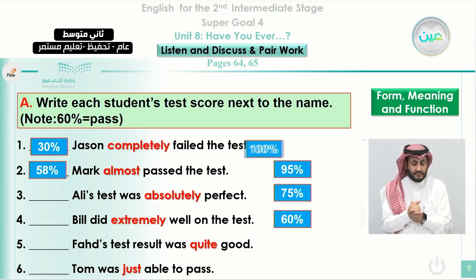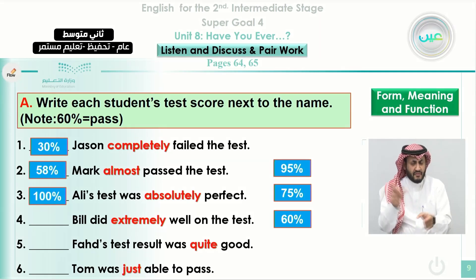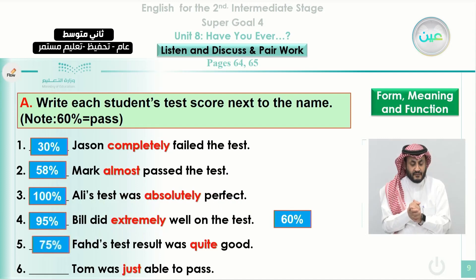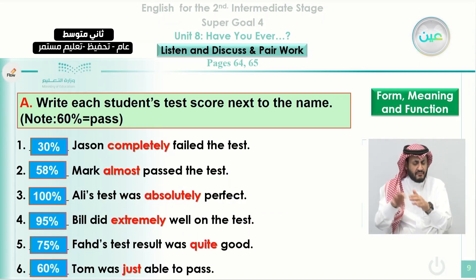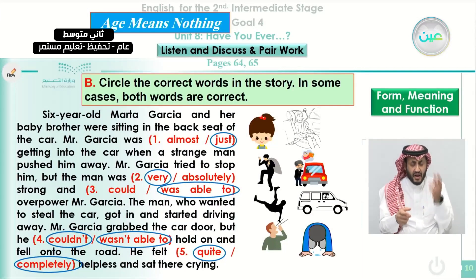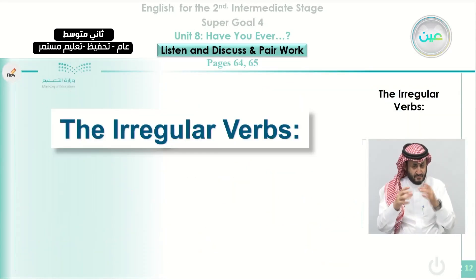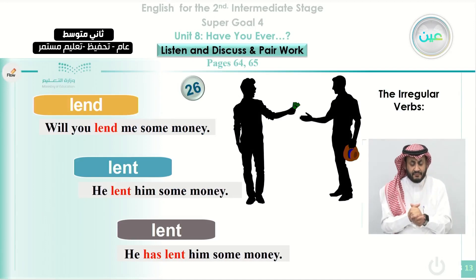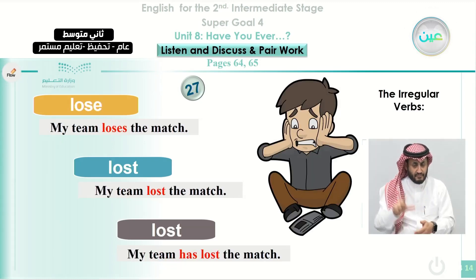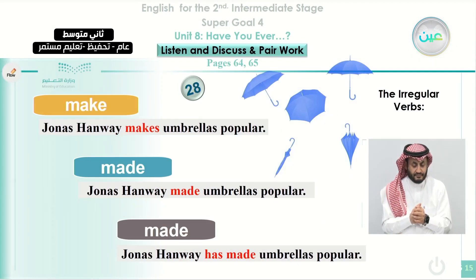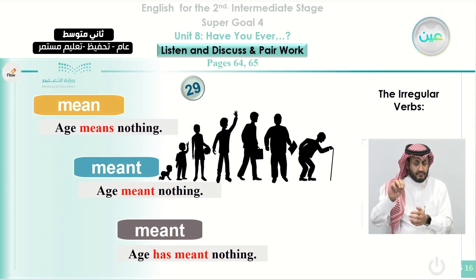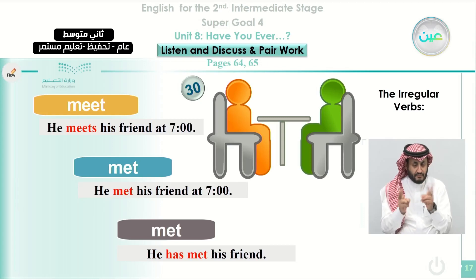We said that 'completely' is 30%, 'almost' is 58%, 'absolutely' is 100%, 'extremely' is 95%, 'quite' is 75%, and 'just' is 60%. We also reviewed the story of Marta and answered exercise B in three paragraphs. We also reviewed some irregular verbs: 'lend' — past and past participle 'lent'; 'lose' — 'lost'; 'make' — 'made'; 'mean' — 'meant'; and 'meet' — past and past participle 'met.'